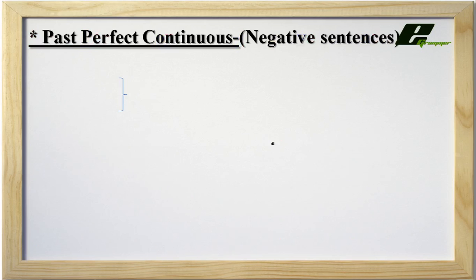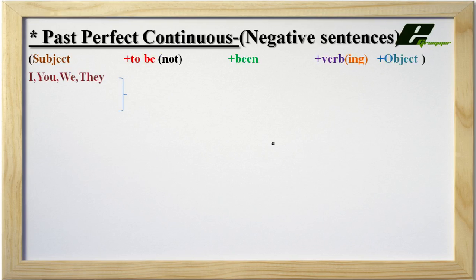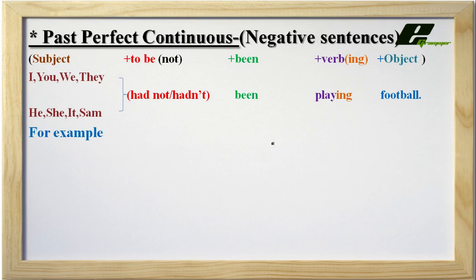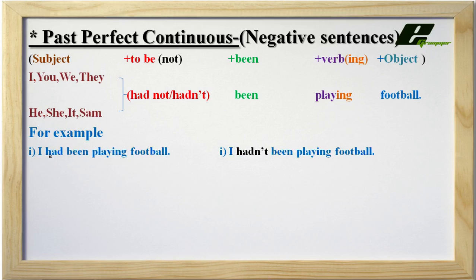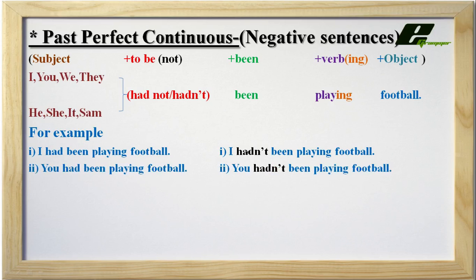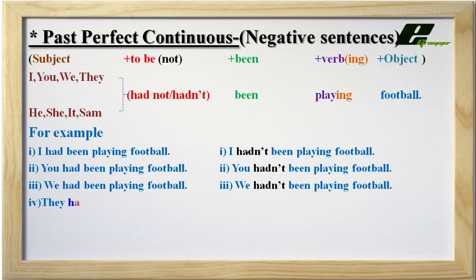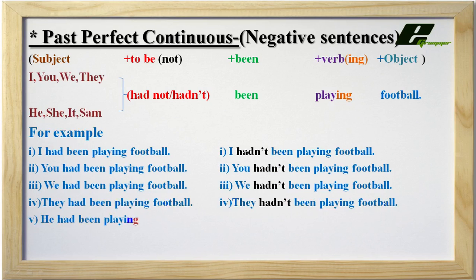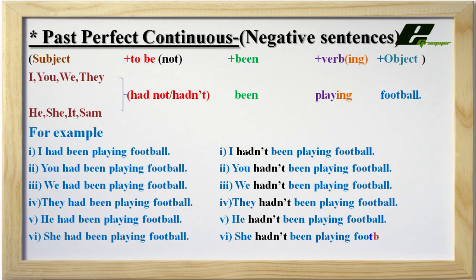Now we will see negative sentences using the short form. Instead of 'had not' we use 'hadn't'. The first word (subject) and the remaining part stay the same; only 'had' is replaced by 'hadn't'. I had been playing football → I hadn't been playing football. You hadn't been playing football. We hadn't been playing football. They hadn't been playing football. He hadn't been playing football. She hadn't been playing football. Sam hadn't been playing football.